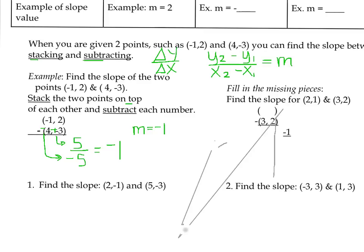Now let's try another one. I sort of started filling it in for you. Notice the first point is missing. So I'm going to put 2 comma 1 up on the top. And then since I'm subtracting, I'm going to change the signs. So this becomes a negative 3 and a negative 2. When I combine positive 2 and negative 1, I get negative 1. And when I combine 1 and negative 2, I get negative 1. And negative 1 over negative 1 is 1. So the slope is 1.